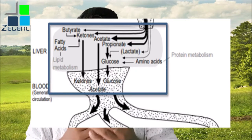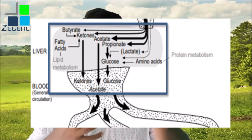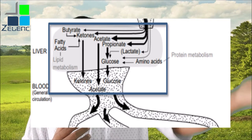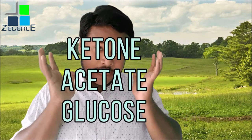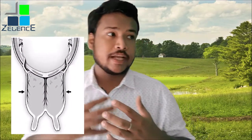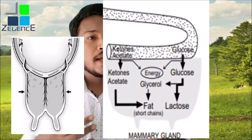The volatile fatty acids can convert themselves into ketone bodies — ketones and acetate — which then travel to the liver. Lactate also goes to the liver, where it converts into glucose. This ketone, acetate, and glucose stays inside the liver, and from the liver, glucose, ketones, and acetate travel to the mammary glands. The mammary gland takes glucose and converts some of it into glycerol.